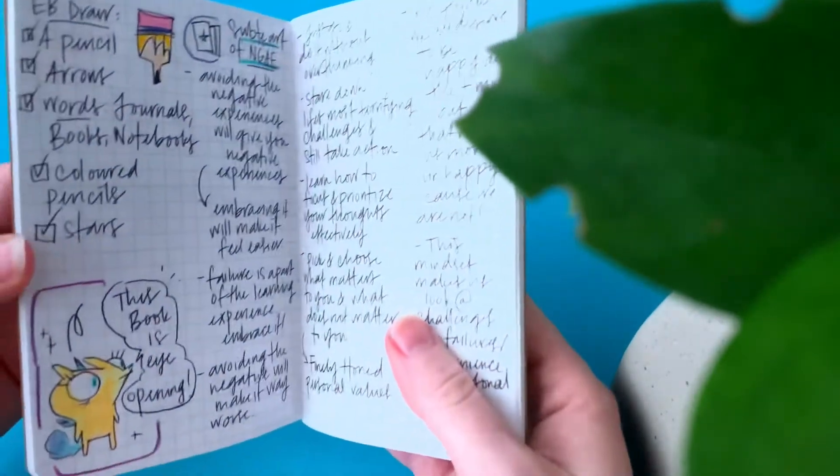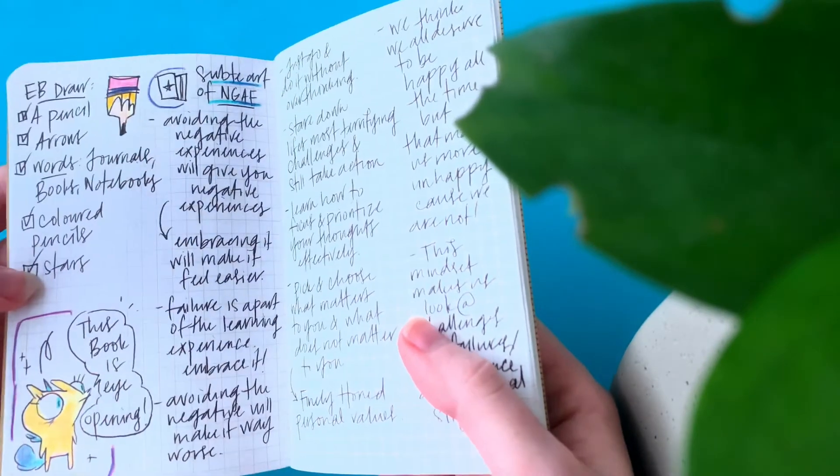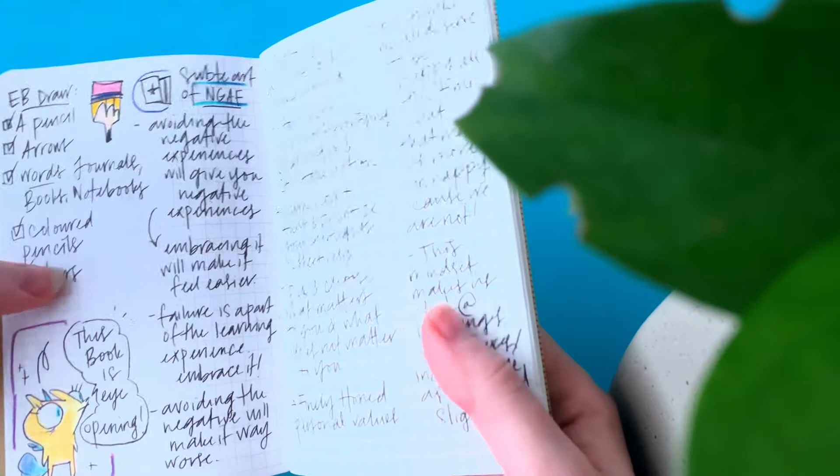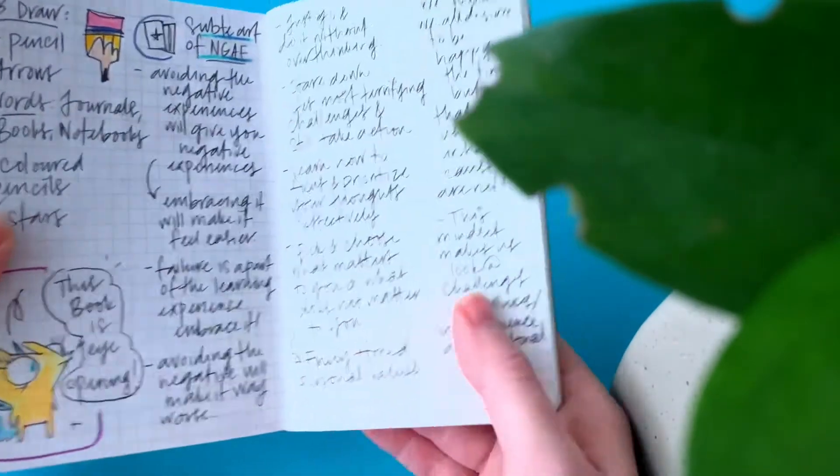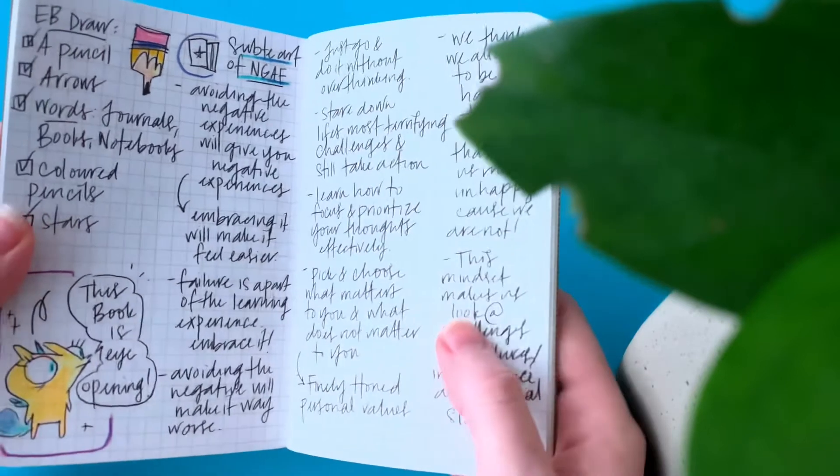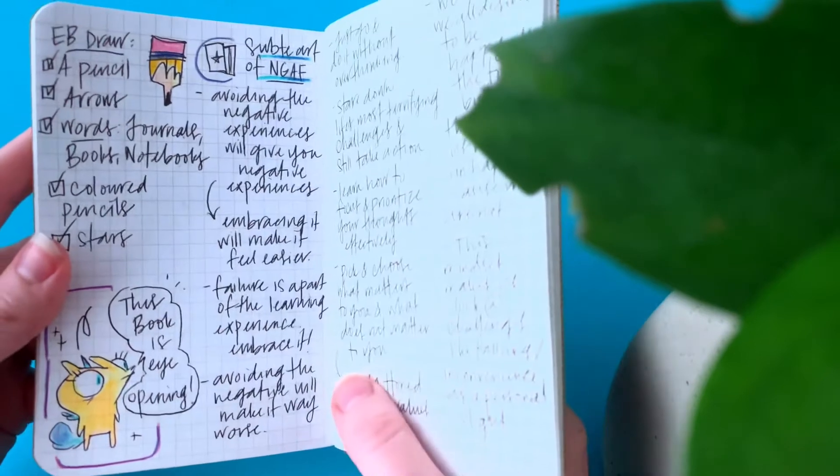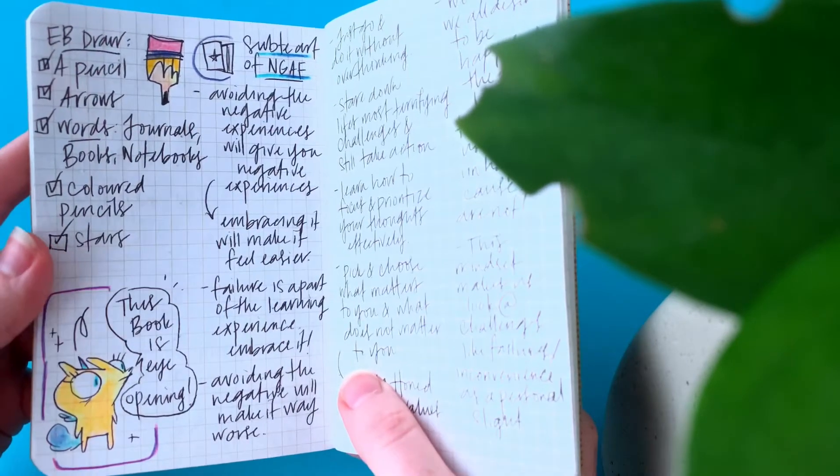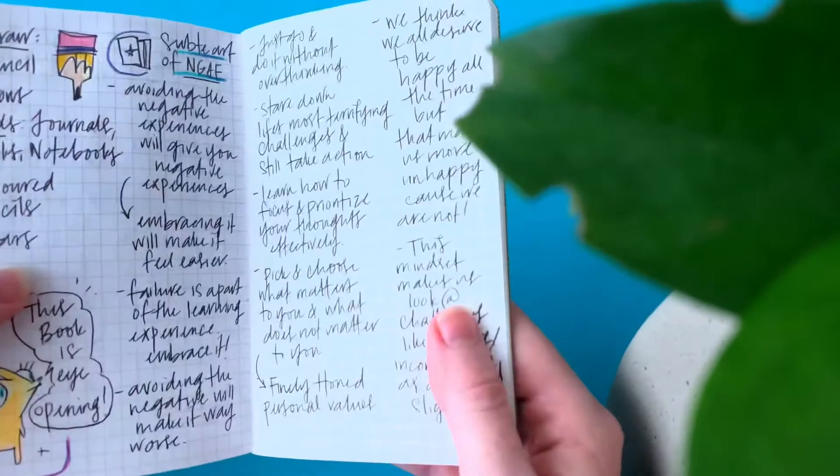I started reading The Subtle Art of Not Giving a Fuck and it's life-changing. Mostly I just want to read it because I care too much about certain things and what people think and I don't want to do that. I don't want to care too much. I want to care about specific things and also draw healthy boundaries where I need to. So anyways, I just wrote, this book is eye-opening.